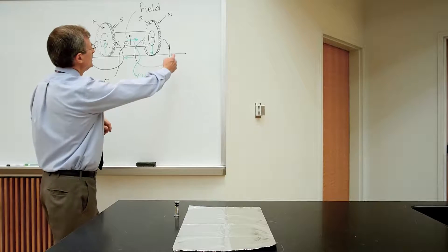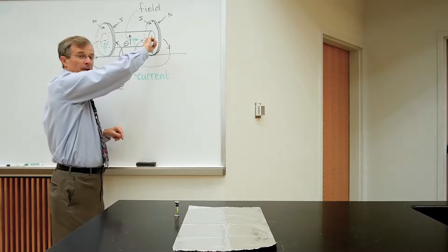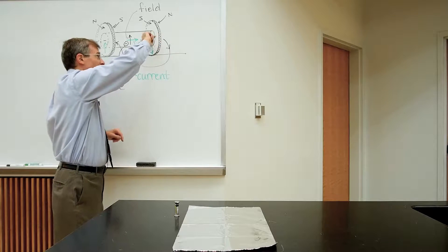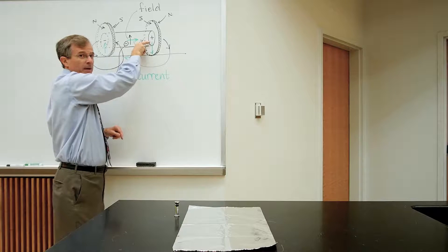How so? So the north pole of this magnet faces out, so the magnetic field lines come out of the north pole and into the south pole of that magnet.